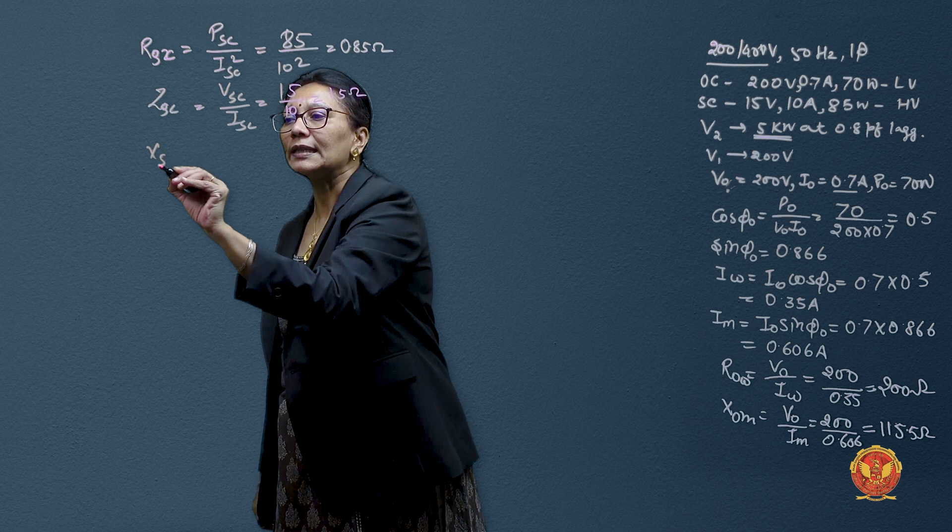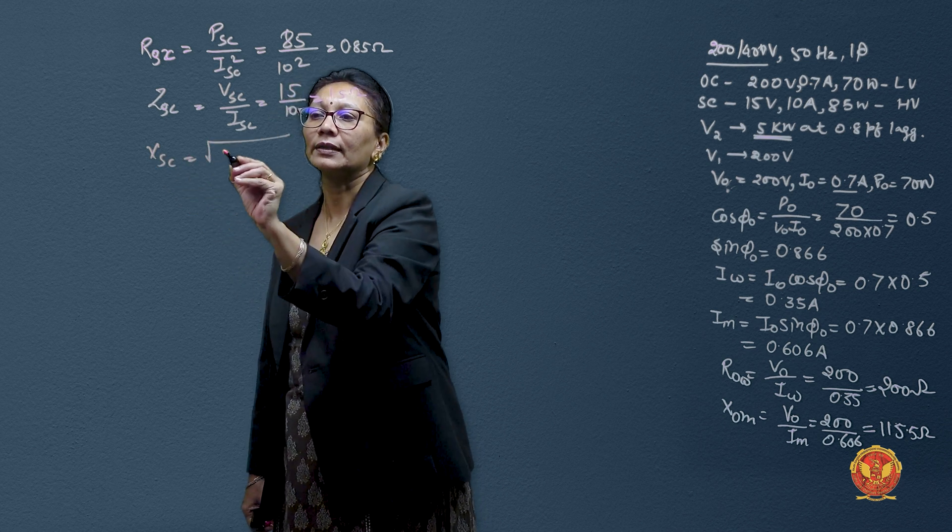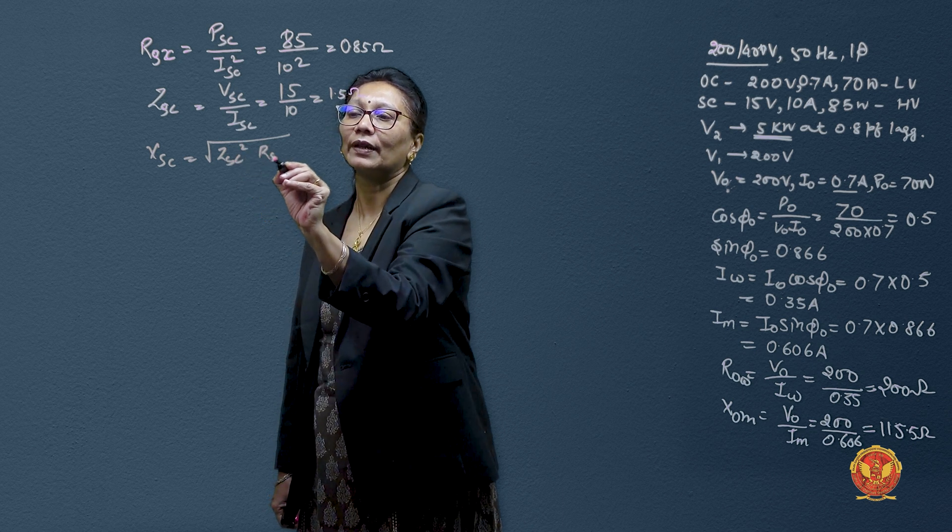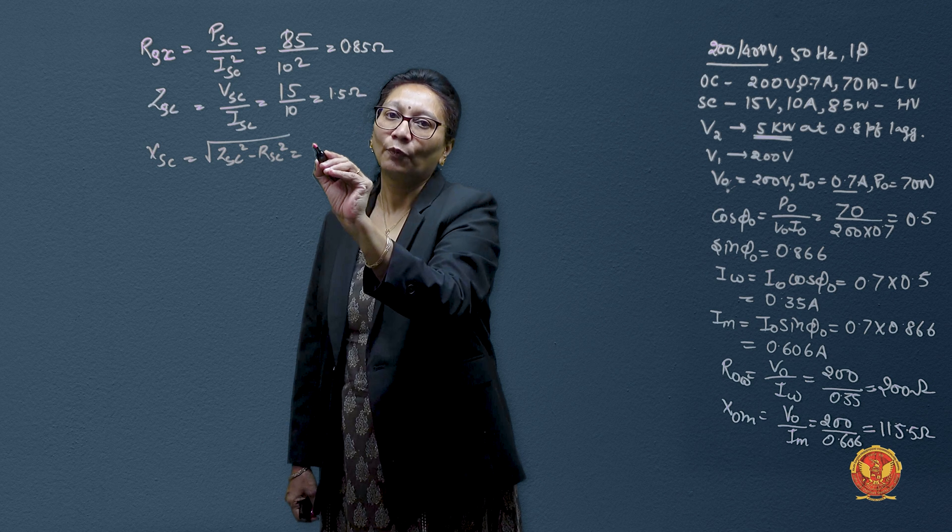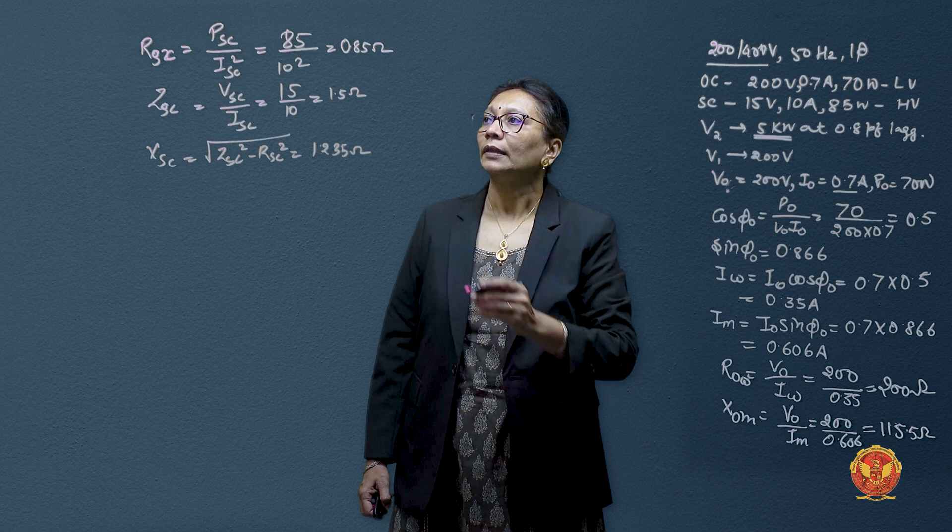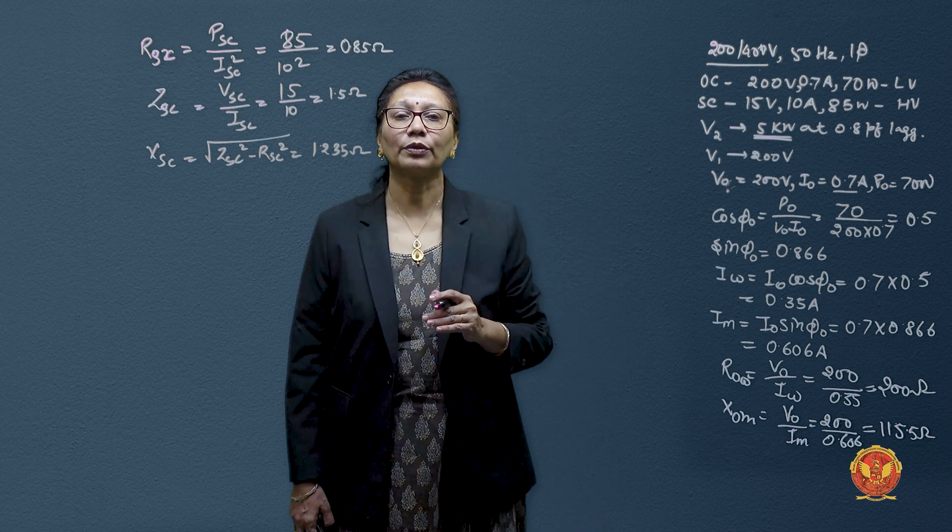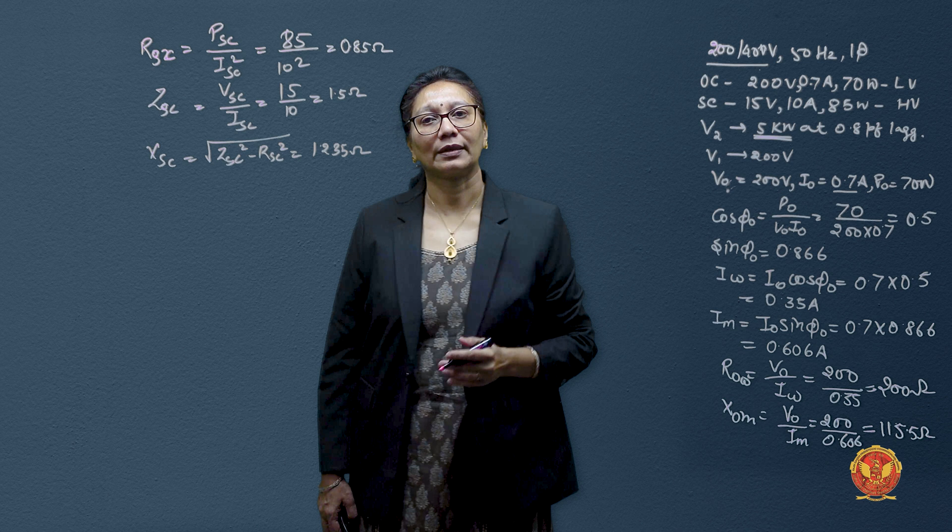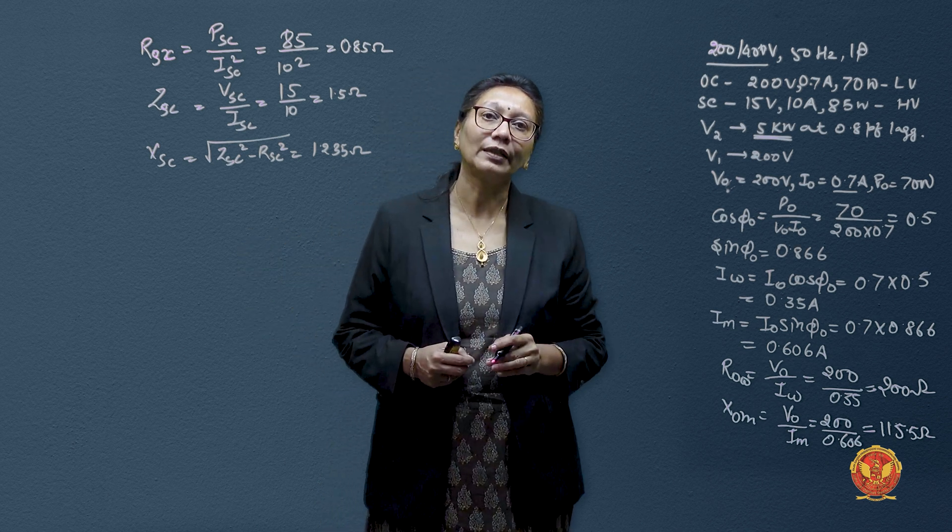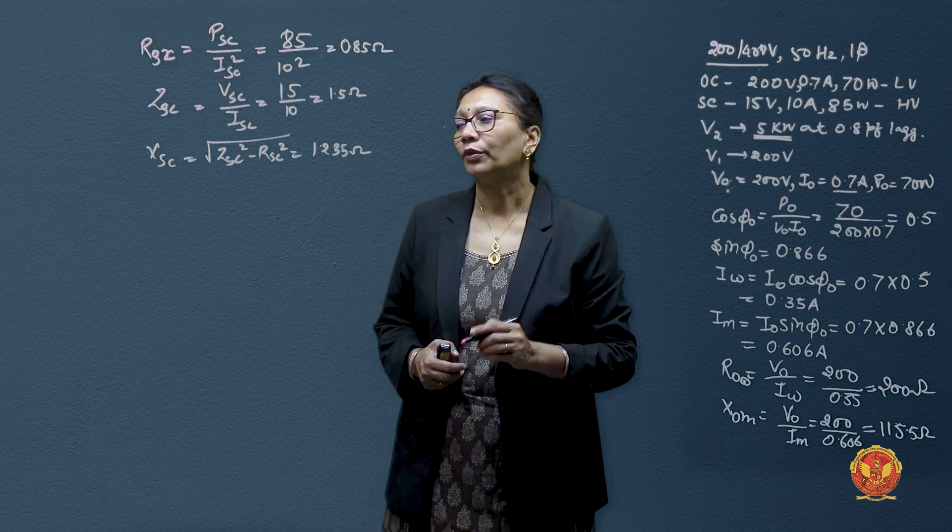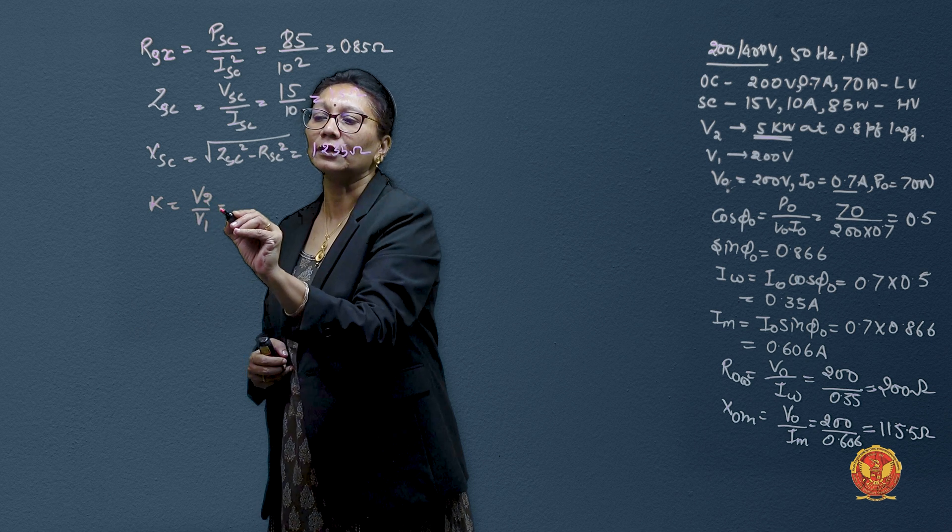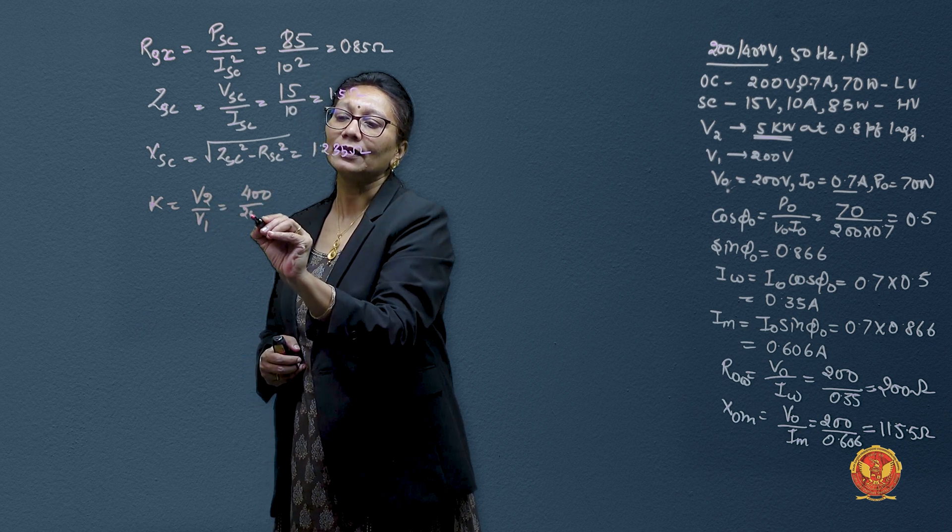From these two, we are easily having reactance that is Z square minus R square which gives us value as 1.235 ohms. Now we have these three components which indicate primary or secondary resistance and reactance. Now we need to refer the overall equivalent circuit to primary side.